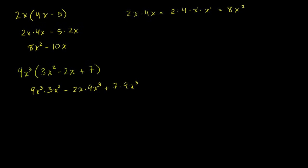This first term is going to be 9 times 3 equals 27, times x to the fifth power — we add the exponents, as we learned in exponent properties. Minus 2 times 9 is 18x to the fourth power. Plus 7 times 9 is 63x to the third. So we end up with this nice fifth degree polynomial.